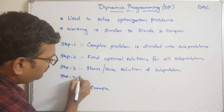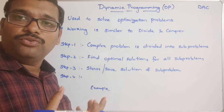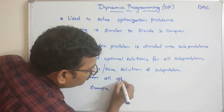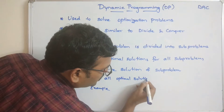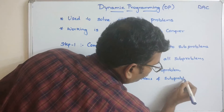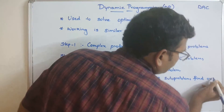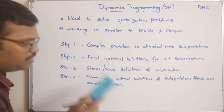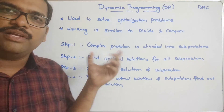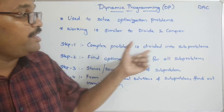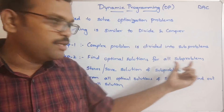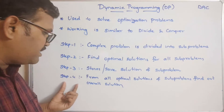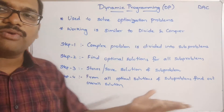Step four: from all optimal solutions of the sub-problems, find out the overall solution. So the four main steps are: one, divide the complex problem into sub-problems; two, find optimal solutions for all sub-problems; three, store each sub-problem's solution in memory for future reference; four, find the overall solution from all optimal sub-solutions.